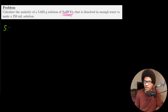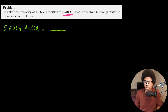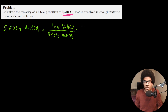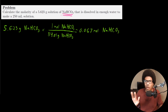We have 5.623 grams of sodium bicarbonate. We'll need the molar mass, which is 84.01 grams of sodium bicarbonate per one mole of sodium bicarbonate. When you do the math, you get 0.067 moles of sodium bicarbonate in this solution. So we now have the number of moles of our solute.